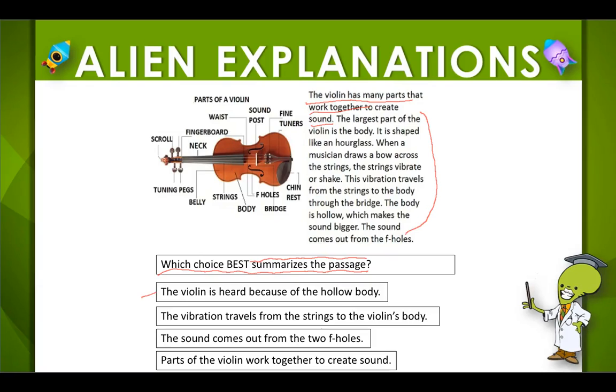So that is what the passage is mainly about. Which of these retells that thing in a shorter way? Let's look at this one, for example: the violin is heard because of the hollow body. It covers only one detail, this is not the correct answer. Of the remaining three, which one is your correct answer? Which one retells the main essence or ideas of the passage?